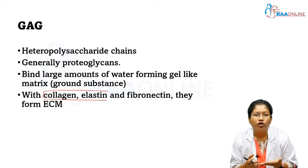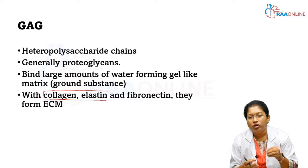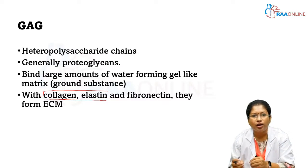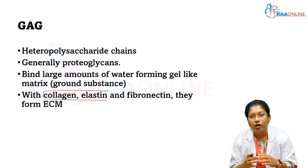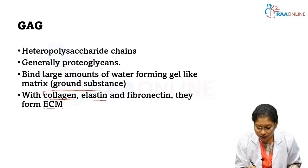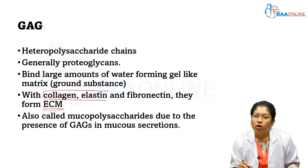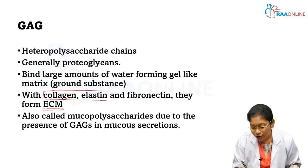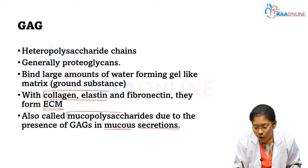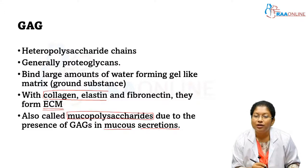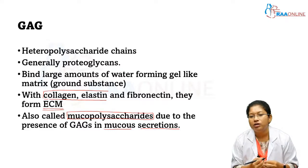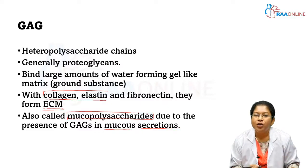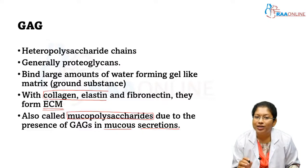Glycosaminoglycans give a gel-like matrix to which fibrous structures like collagen, elastin, and adhesive proteins like fibronectin are attached or linked to form the extracellular matrix. They are also called mucopolysaccharides due to the presence of glycosaminoglycans in mucus secretions. So mucopolysaccharide is the old name for glycosaminoglycans. All of these are heteropolysaccharides and also contain a proteoglycan.